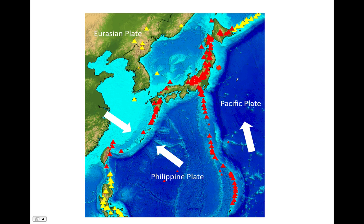Here we have the Pacific plate, the Philippine plate, and the Eurasian plate. The Pacific plate is converging with and subducting under the Eurasian plate — here is the trench. The Pacific plate is also subducting under the Philippine plate, with another trench here. The volcanoes running along these trenches form volcanic island arcs, including the Japanese islands and the Marianas Islands. There is another subduction zone where the Philippine plate is subducting under the Eurasian plate, with its own trench and associated volcanoes. This area is also prone to large earthquakes.